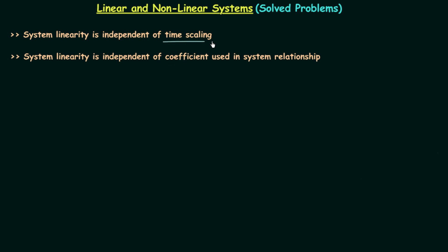Till now we have seen the effect of time scaling and coefficient used on the system linearity, and we found the system linearity is independent of both. Now in this presentation we are going to find out the effect of any added or subtracted term other than input and output on the system linearity, and for this we will take our sixth problem.